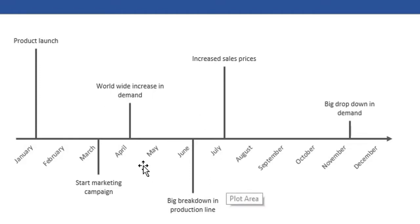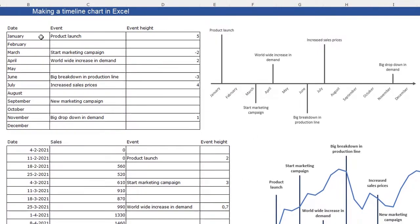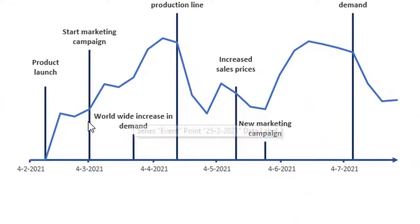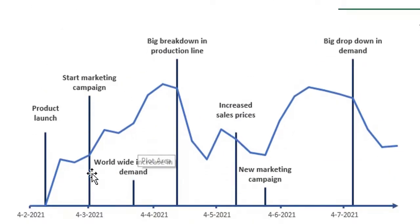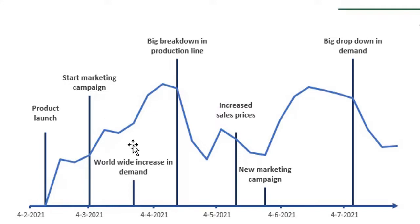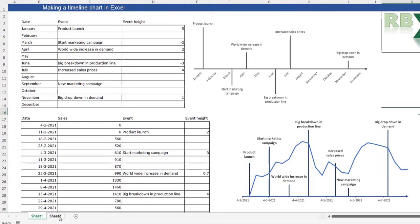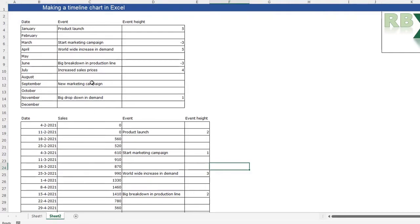The first timeline chart has events on a horizontal axis which come from a data table. The second timeline chart is a basic timeline combined with a line chart showing sales volumes, so you can easily see which event caused an increase or decrease in sales. I'm going to go to this sheet and make these two timeline charts from scratch.